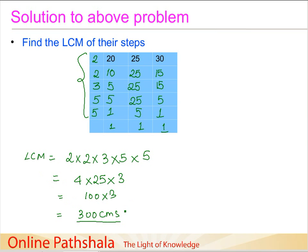Each person should walk 300 centimeters. This is the minimum distance for each of them — covering the same total distance according to their respective step sizes. This is the point where all three persons will meet.